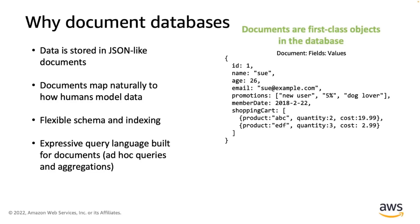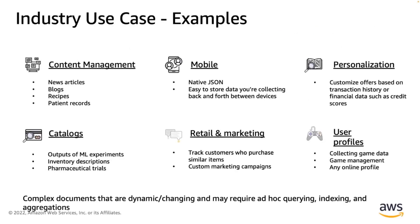In order to provide ad hoc capabilities, JSON has an extensive query language built for documents. You can retrieve specific fields, values, and even run regular expression queries. DocumentDB uses a JSON-style query language, so it's very easy to learn. Looking across industry use cases, you can see content management, mobile, personalization, catalogs, retail marketing, and user profiles. For mobile, it's very easy to store data going back and forth in JSON format, which many mobile apps already leverage. For cataloging, the idea is to record output of machine learning experiments, inventory descriptions, and pharmaceutical trials.